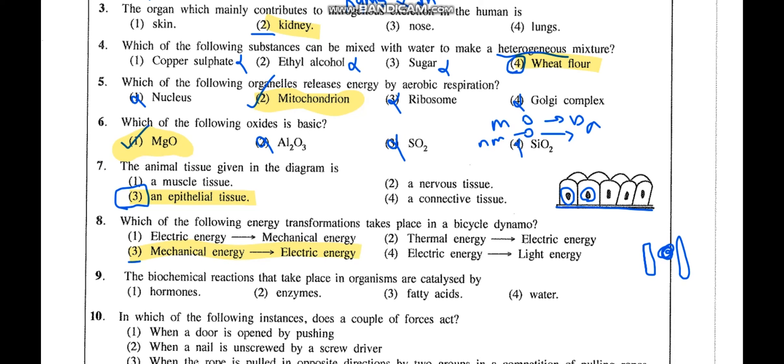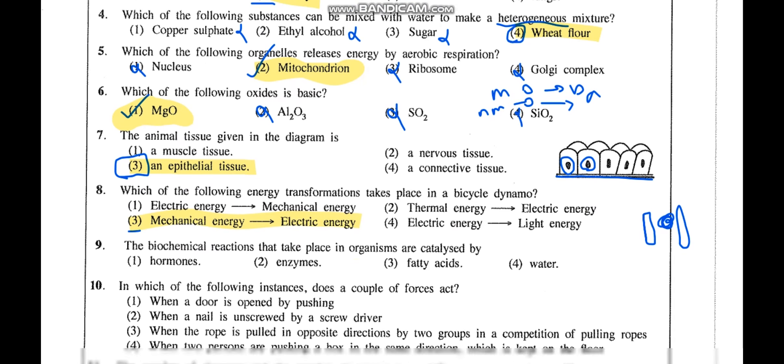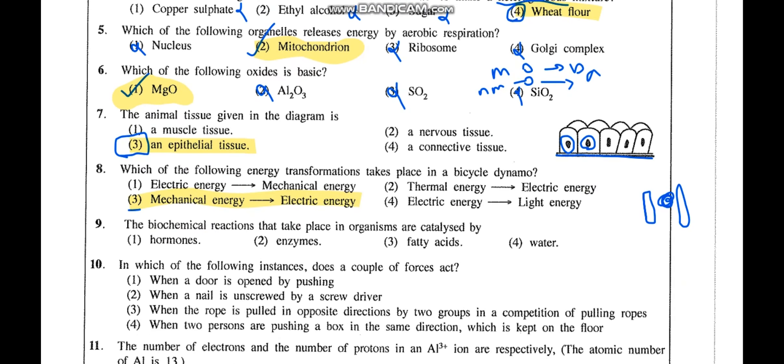Question 9: The biochemical reactions that take place in an organism are catalyzed by what? Catalyzing means increasing the rate of biochemical reactions. Biochemical reactions are catalyzed by enzymes. That is an easy one.